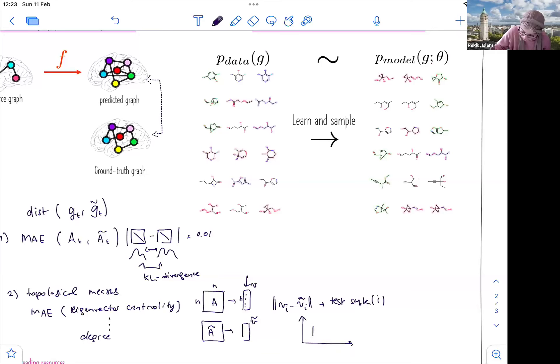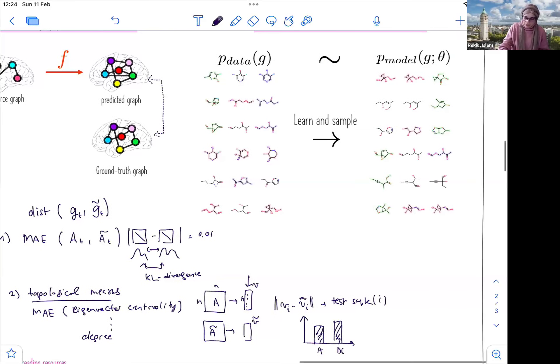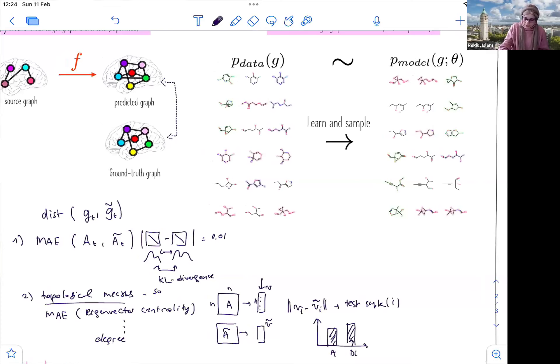My MAE using, for example, the matrix, this is my MAE using the degree centrality or different kinds of centralities. And it would be good to use multiple topological measures, because this allows us to evaluate the soundness, the topological soundness of the predicted or generated graph.